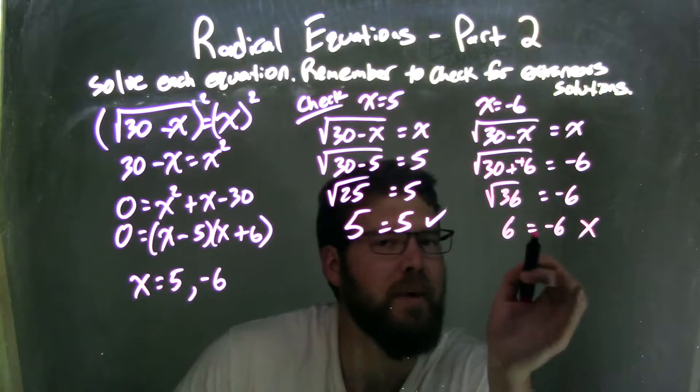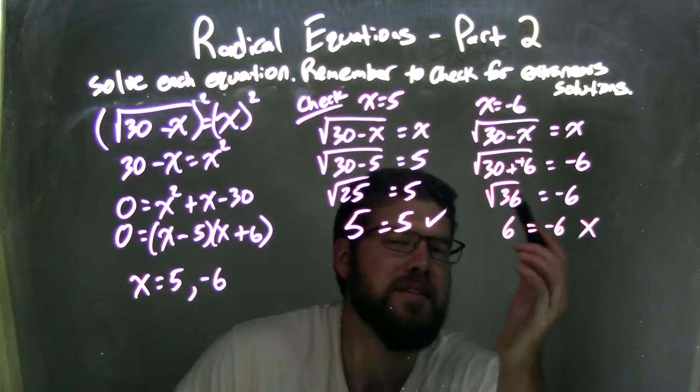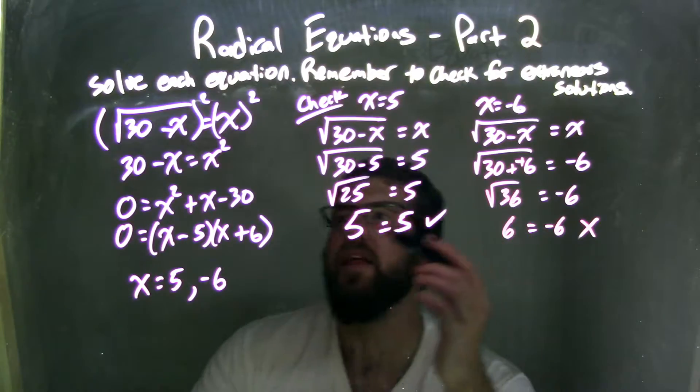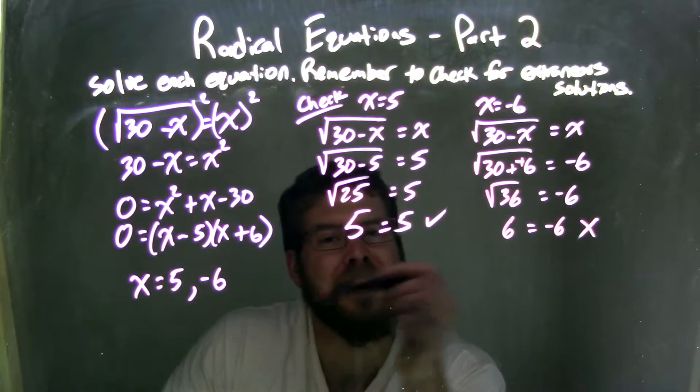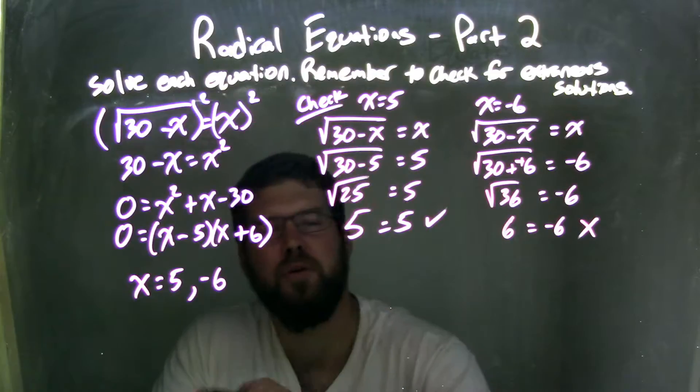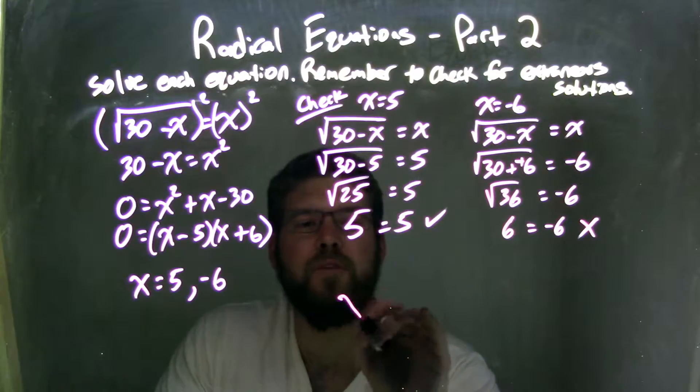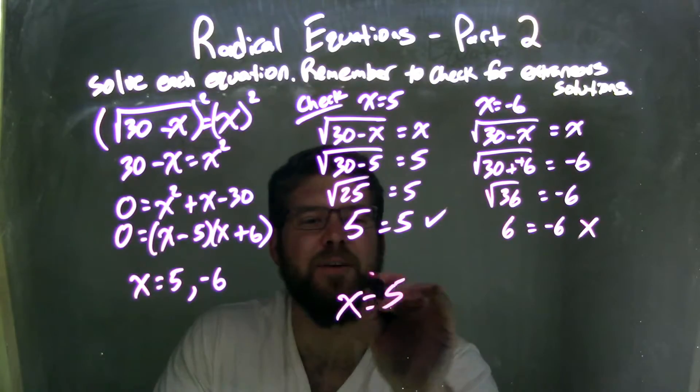And so this is my extraneous solution. Negative 6 is my extraneous solution, meaning that when I solved here I got an answer, but when I checked it didn't come back full circle. So it's extraneous. So my only true solution is x equals 5.